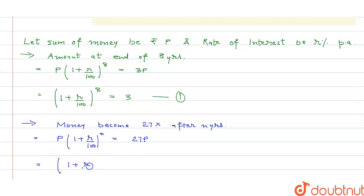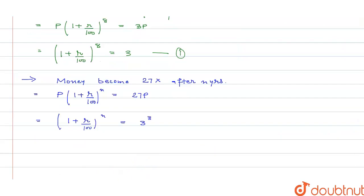So (1 + r/100)^n = 27. We can put the value of 3 from equation first.